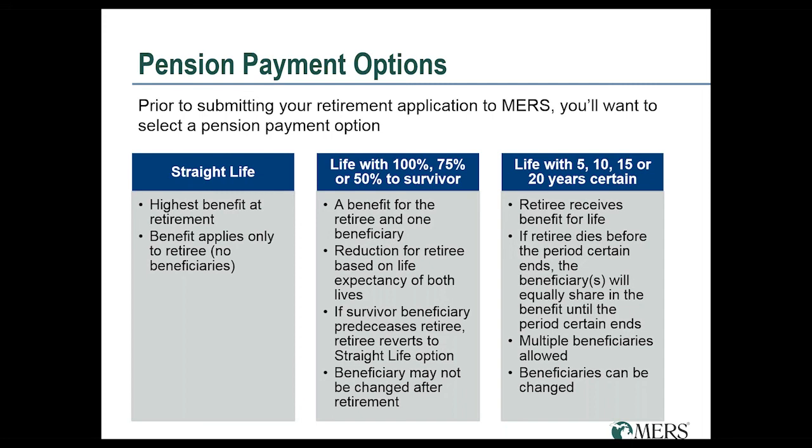With the survivor payment options, because we'll be paying lifetime benefits to your survivor beneficiary, the age of your survivor beneficiary comes into play when calculating the cost. For example, if your spouse is about the same age as you and you choose life with 100% to survivor, generally it's about a 10 to 12% reduction from your straight life amount. With the period certain options, the age of your beneficiary would not come into play.